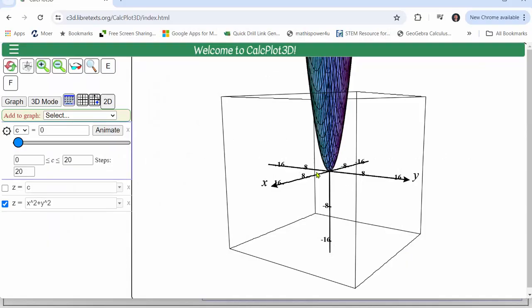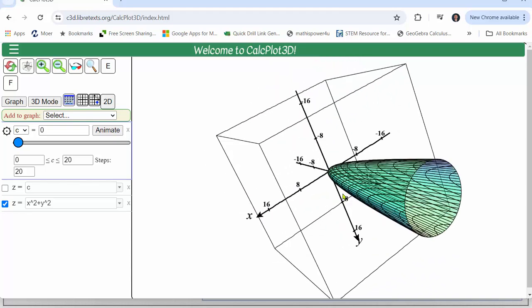This is the graph of the surface given by f(x, y) equals x squared plus y squared which is a paraboloid.